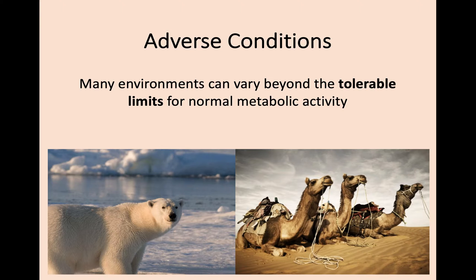Many environments can vary beyond the tolerable limit we spoke about before for normal metabolic activity. That tolerable limit is the range of external conditions that you can survive in. If it goes above or below that limit — say, for example, in temperature — then it's going to be a challenge to survive and keep up your metabolic rate. For example, polar bears live in an incredibly cold environment well below our tolerable temperature limits, but you can also have very hot, dry desert regions on the other extreme. We're going to look at how different animals adapt to survive in these areas.